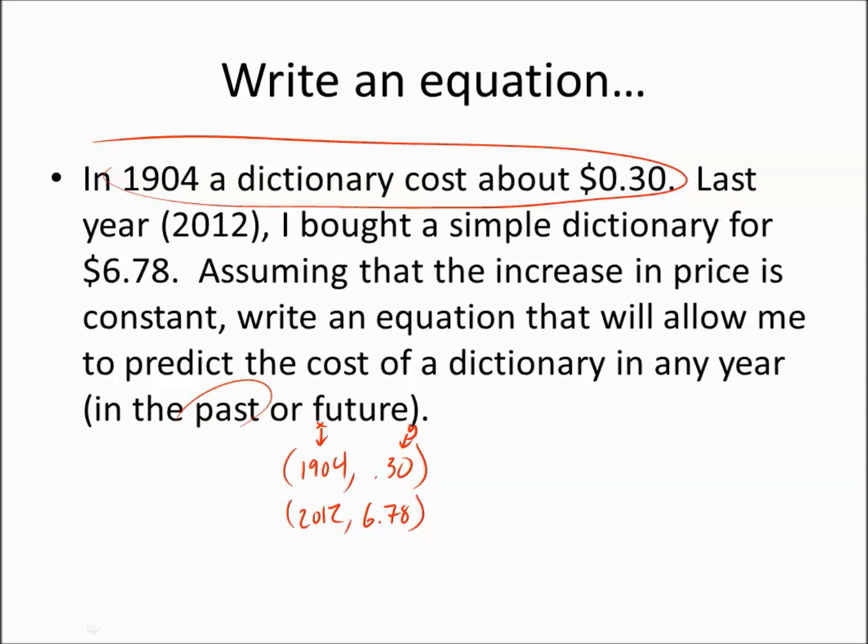How did I decide to put the years here for X and the costs here for Y? Well, the cost depends on the year. As time progresses, it becomes more costly. Making a dictionary more costly is not going to cause time to progress. Discounting your dictionary is not going to make time go backwards. So, it makes sense that the cost depends on the year. As time progresses, it gets more expensive. So, from these two points, you can now get a slope.